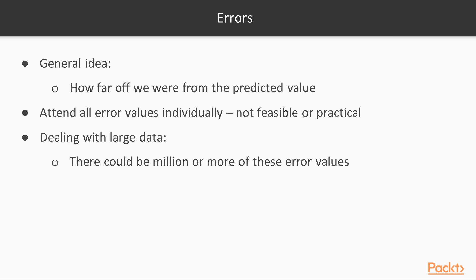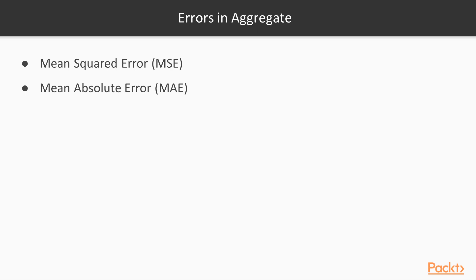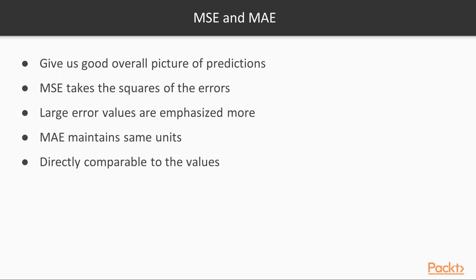Thus we need a way to understand the errors in aggregate. The mean squared error (MSE) and mean absolute error (MAE) provide us with a view on errors in aggregate. MSE, or mean squared deviation, is the average of the squares of all the errors. MAE is the average of the absolute values of all the errors. Both MSE and MAE give us a good overall picture of how good our predictions are, but they do have differences. As the MSE takes the square of the errors, large error values are emphasized more than in MAE — MSE is more sensitive to outliers. MAE, on the other hand, maintains the same units as the variable we are trying to predict, and is thus directly comparable to those values.